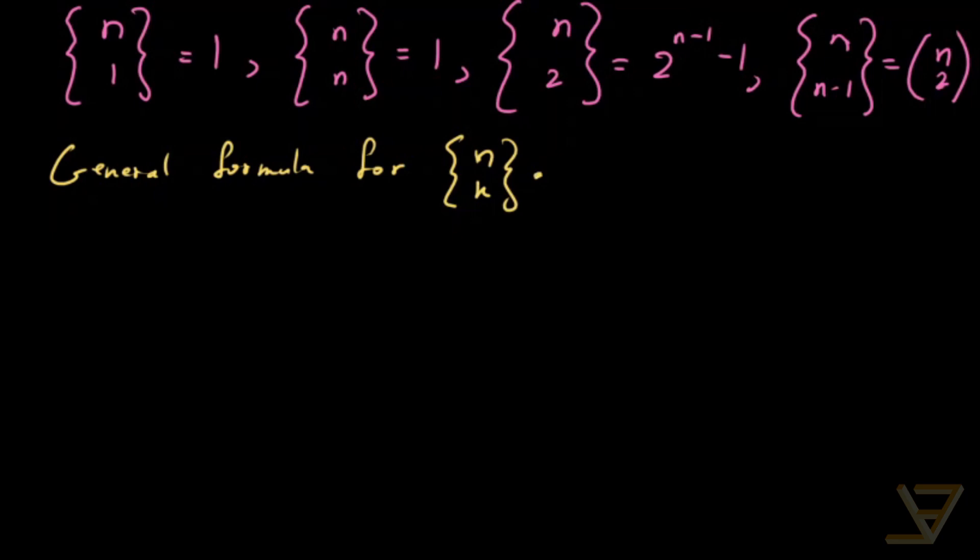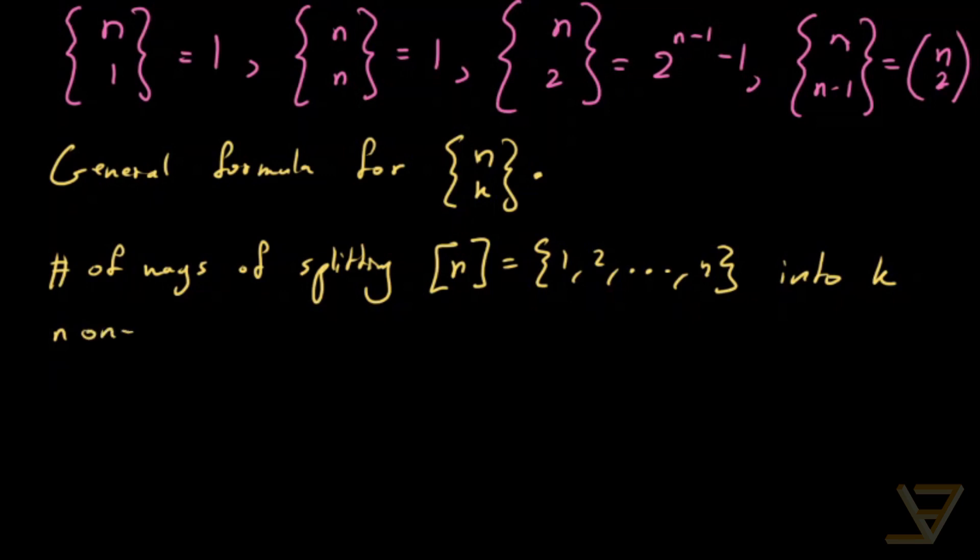What we have to notice is that the number of ways of splitting the first N positive integers 1, 2, through N into K non-empty sets is the same as the following: distributing N distinguishable balls into K indistinguishable boxes.